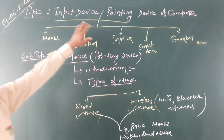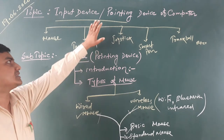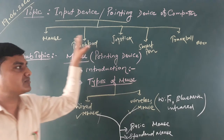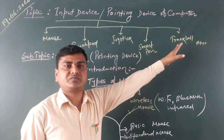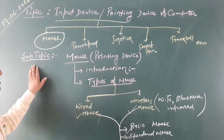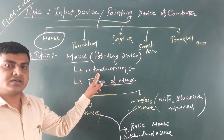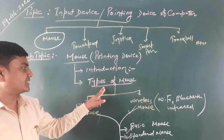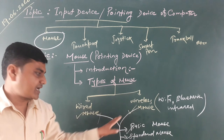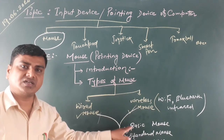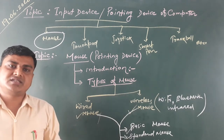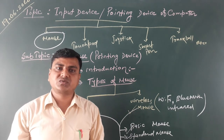Today's topic was input devices or pointing devices. We discussed the mouse — its introduction and types. The types included wired mouse and wireless mouse, which we combined into three categories: basic, standard, and optical. The usage of mouse will be discussed in the next class.